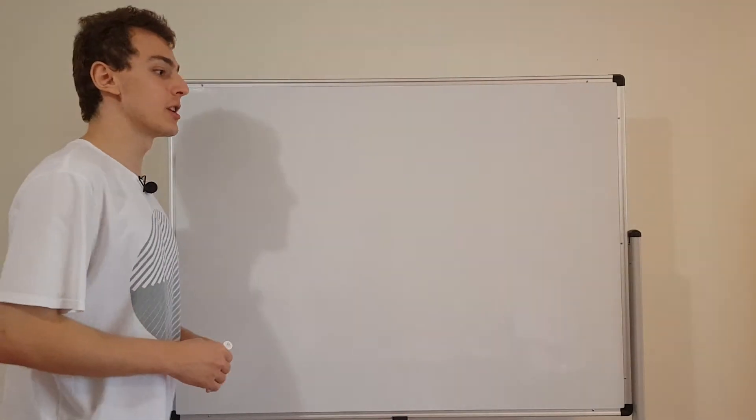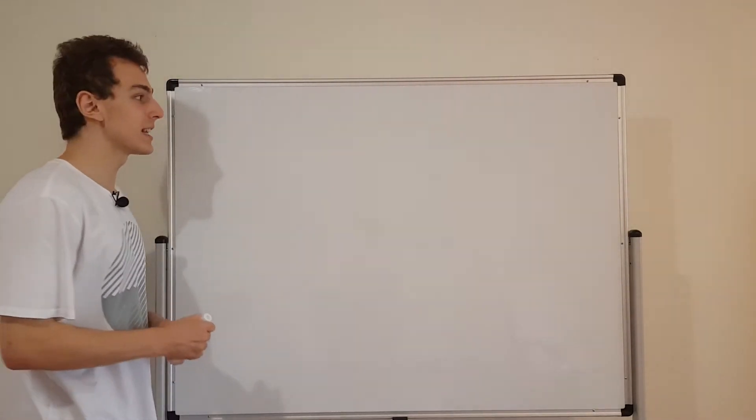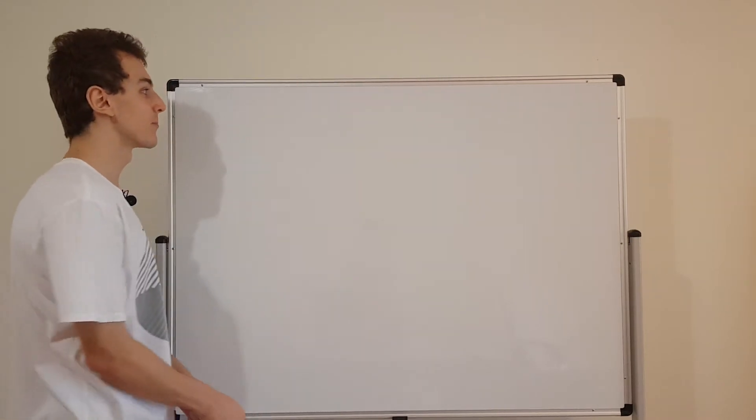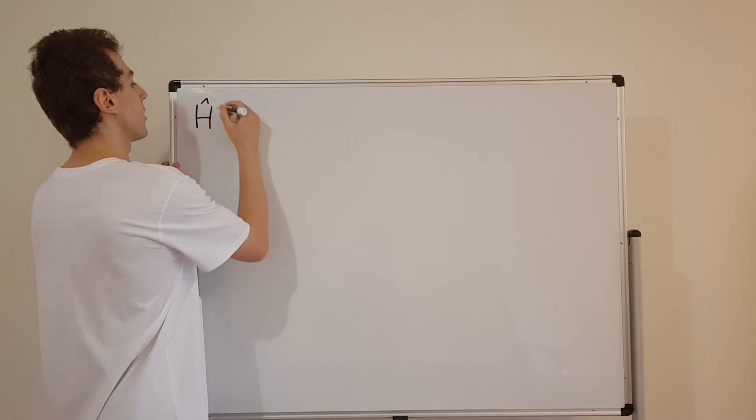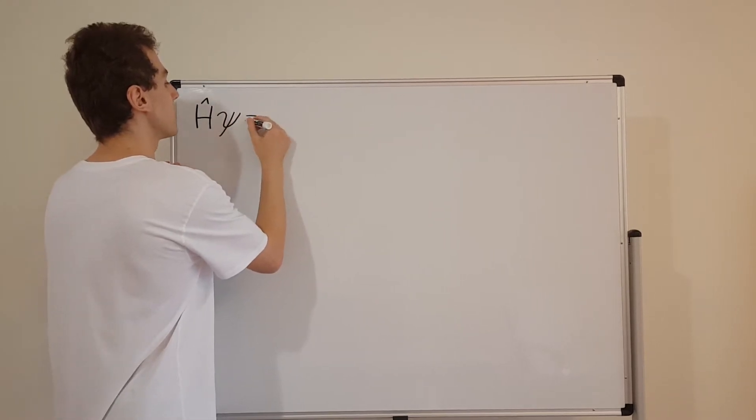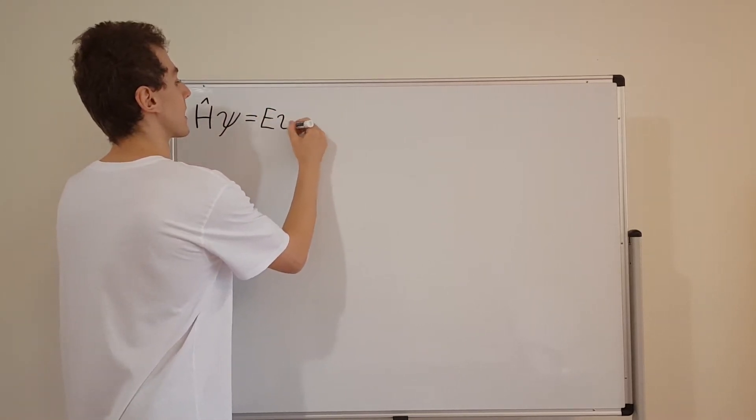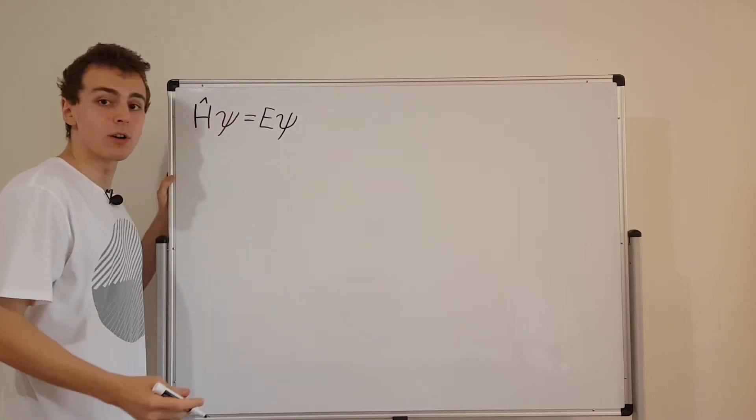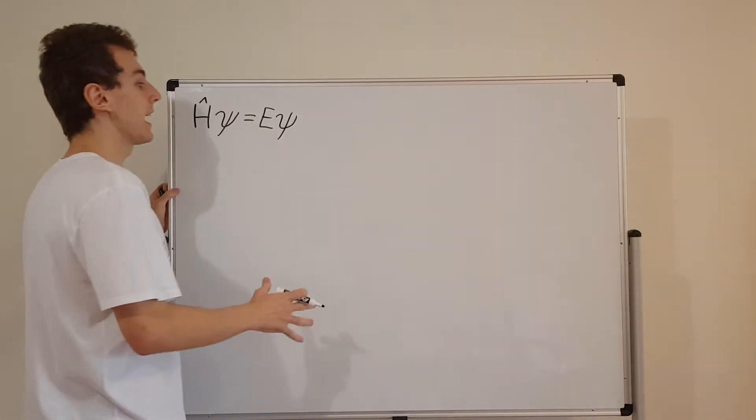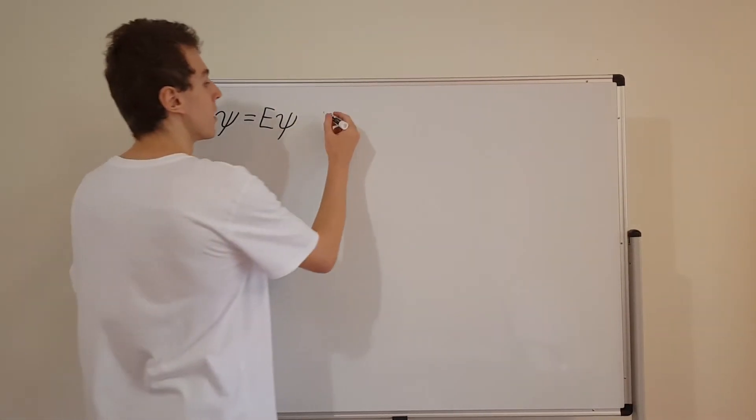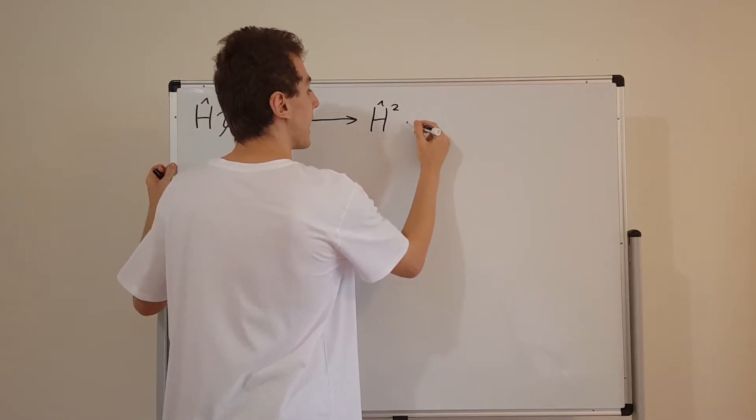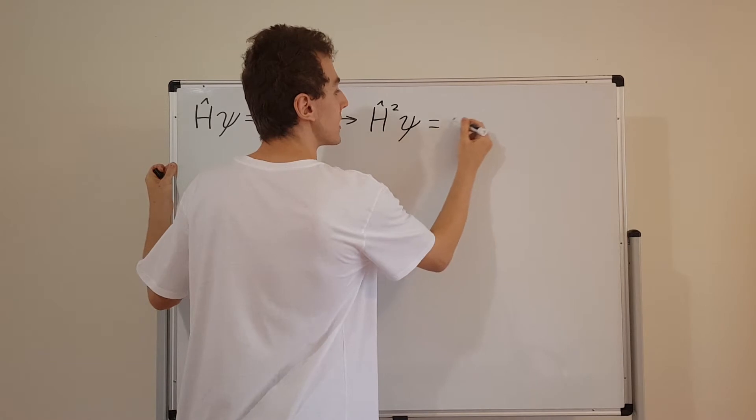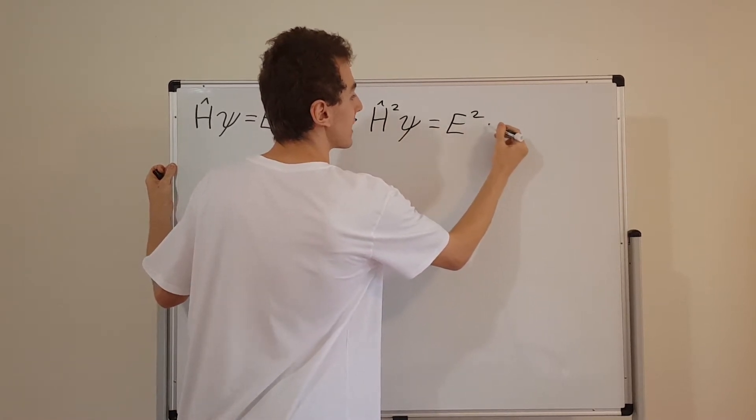First of all, I'm going to write down the time-independent Schrodinger equation. This is the same one we've been using in the previous few parts of this playlist. So we have the Hamiltonian operator acting on psi and that gives us E times psi. And in part 4 we actually derived a related relationship. We found that the Hamiltonian squared acting on psi is actually the same as E squared multiplying psi.